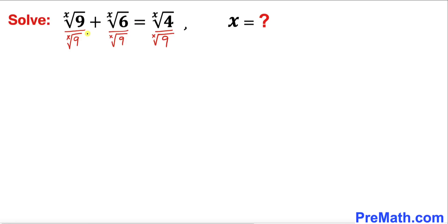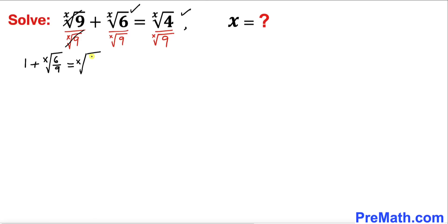Now let's simplify. We know this x-root of 9 and this x-root of 9 cancel out, so we end up with simply 1 plus x-root of 6 divided by 9, equals to x-root of 4 divided by 9 on the right-hand side.